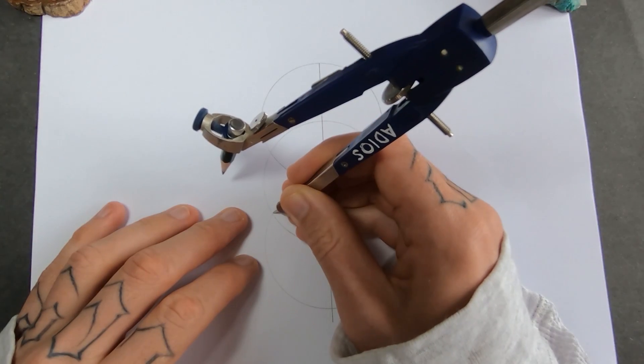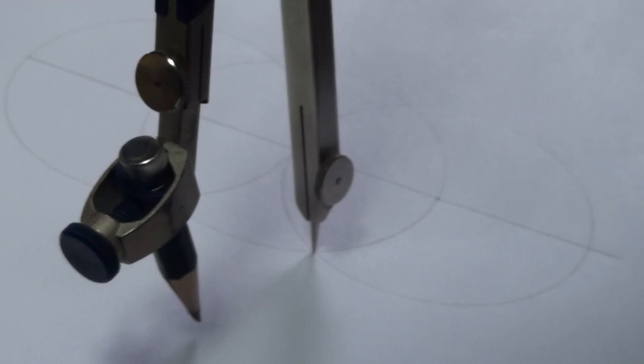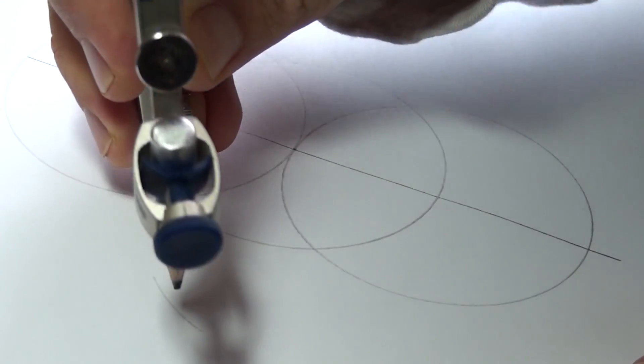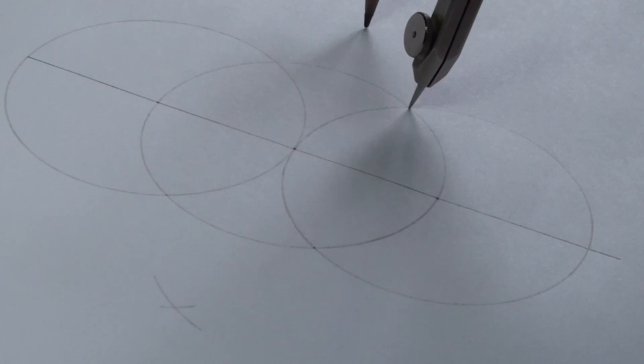So because it's an octagram, obviously I need to divide it into 4, and then 8. So I'm going to use the seed of life. I'm going to make it symmetrical just because I like symmetry.